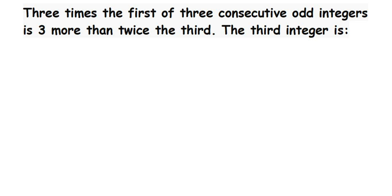Here's a question on integers: three times the first of three consecutive odd integers is three more than twice the third integer. If you read this question first it's quite confusing — they have given a lot of relationships between the first and third number. So let us read the question once again and start framing it.